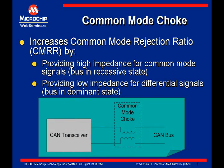Common mode chokes increase the common mode rejection ratio, or CMRR, by providing high impedance for the common mode signal — that is, when the bus is in a recessive state with no differential voltage between the CAN-H and CAN-L pins — and providing low impedance for differential signaling, that is, when the bus is dominant. Chokes are common on CAN buses and can implement filtering on the common mode signal without adding a lot of distortion, because the coils are usually matched fairly well. Like RC and LC filters, any mismatch in the inductance of the coils can cause distortion on the differential signals. Also, the inductance of the coils and the capacitance of the PCB could theoretically create a tank circuit and cause oscillations, although that is rare.